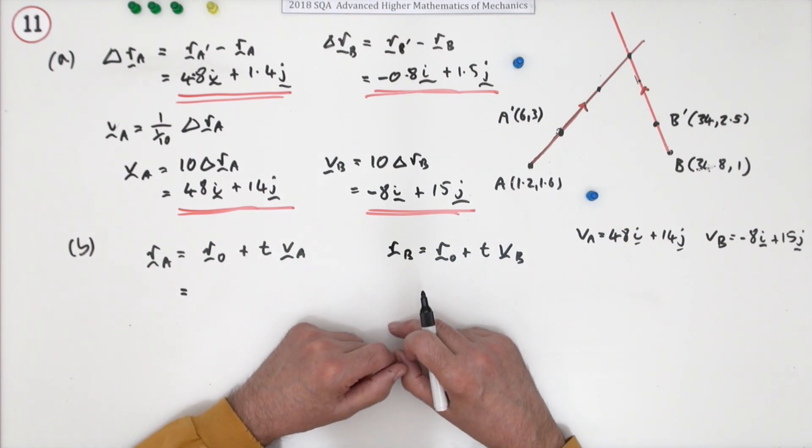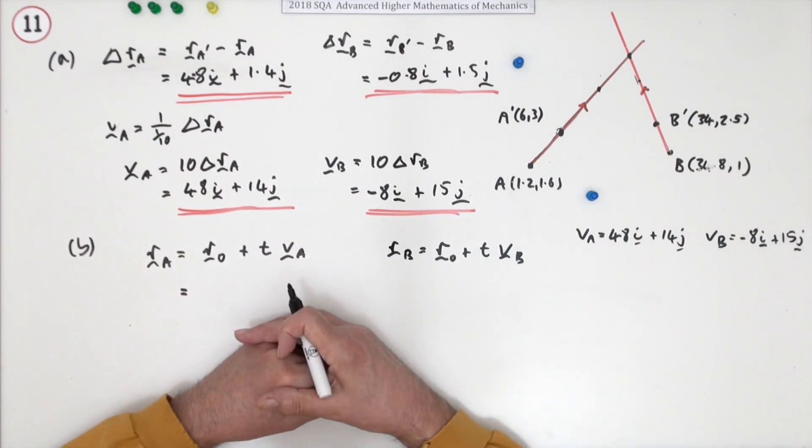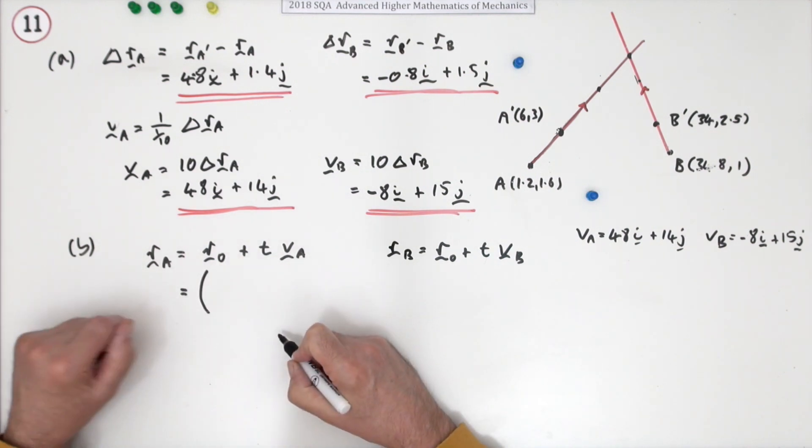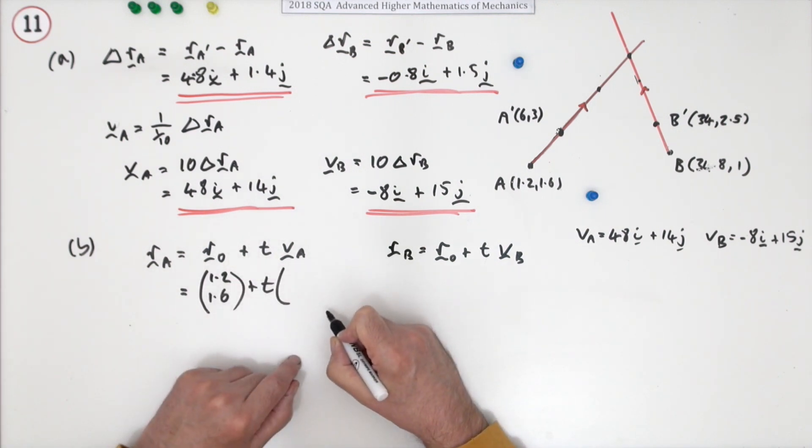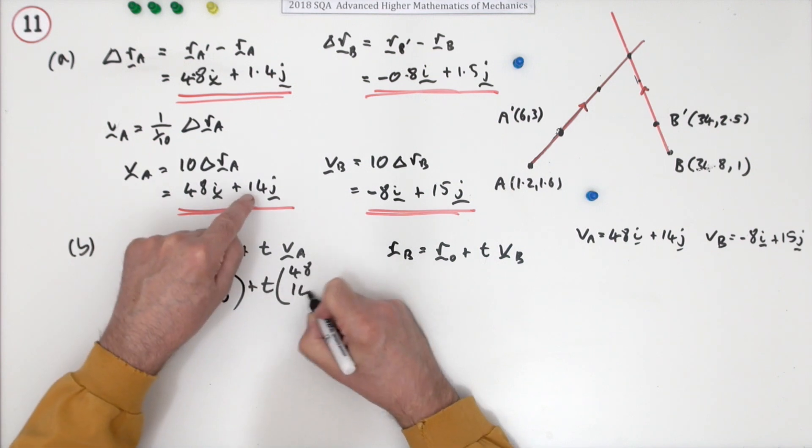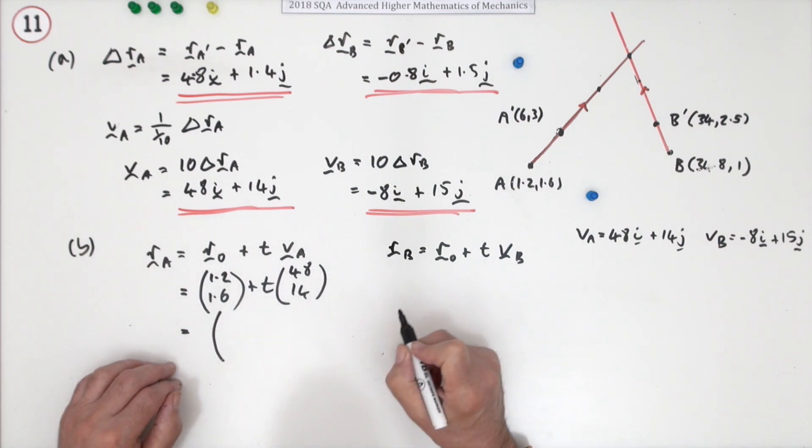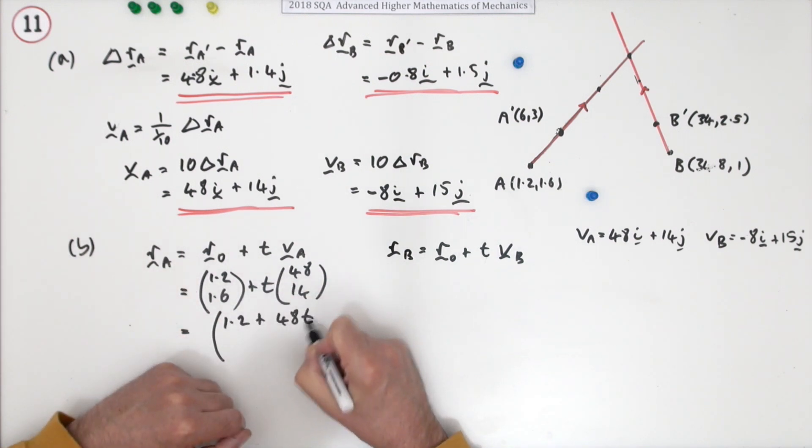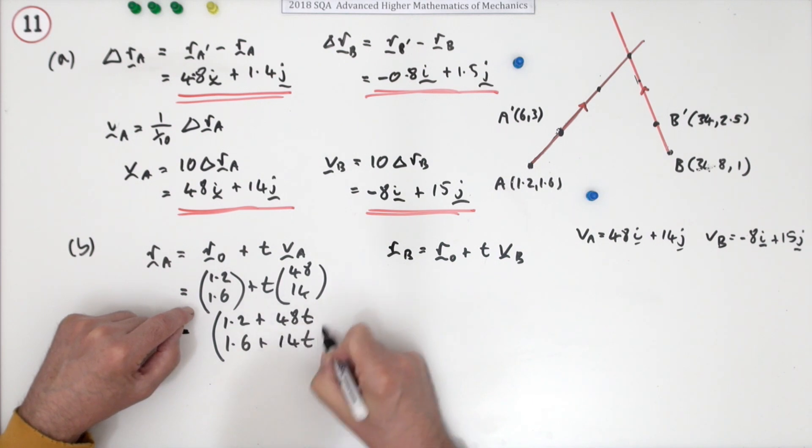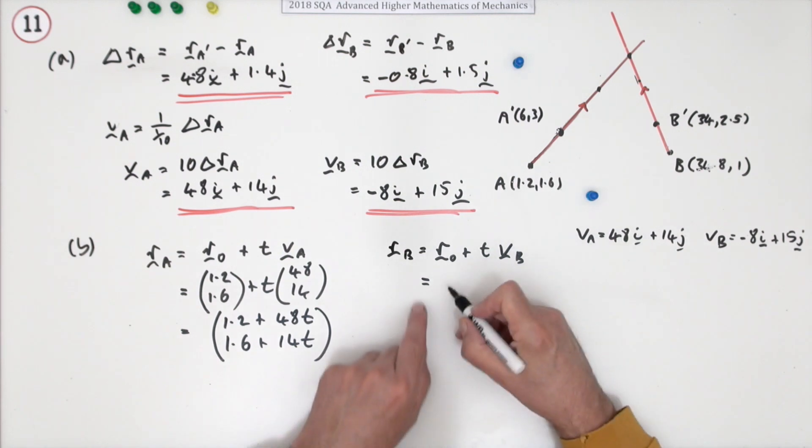You're only going to get one mark for working this all out. Now I don't need to stick with the iji business, I could go with the component form here. Maybe I will just switch to this now. So it started off at (1.2, 1.6) and I want to add on t lots of the velocity vector, which is (48, 14). Which gives me altogether this little expression: 1.2 + 48t and 1.6 + 14t for the position of A at any given time, which are the parametric equations of that line in two dimensions.